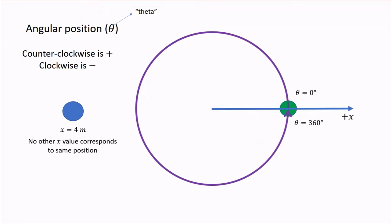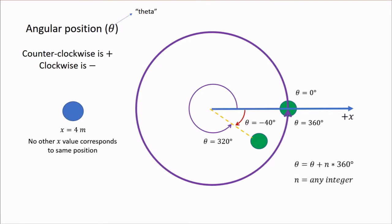The same was true for my example from before. I could refer to the same point as 320 degrees or as negative 40 degrees. In general, we can write this equation, which says that when you add 360 degrees to an angular position theta, you end up at the same angular position. More than that, if you add any multiple of 360 degrees, such as 720 degrees in the case where n equals 2, you will end up at the same theta.